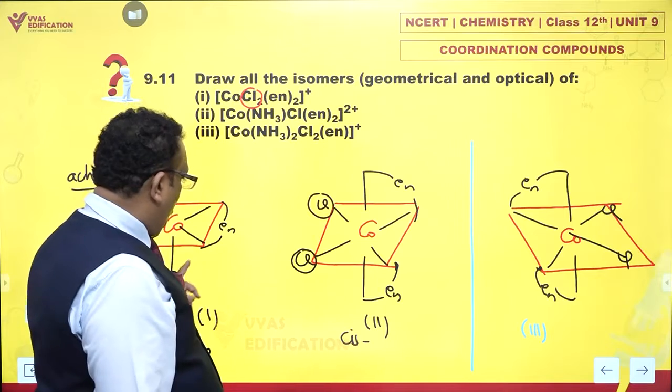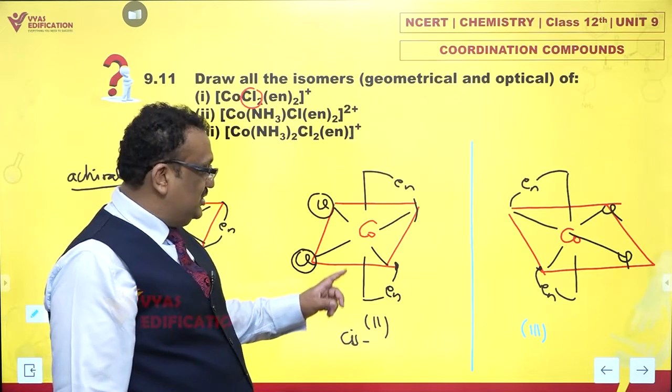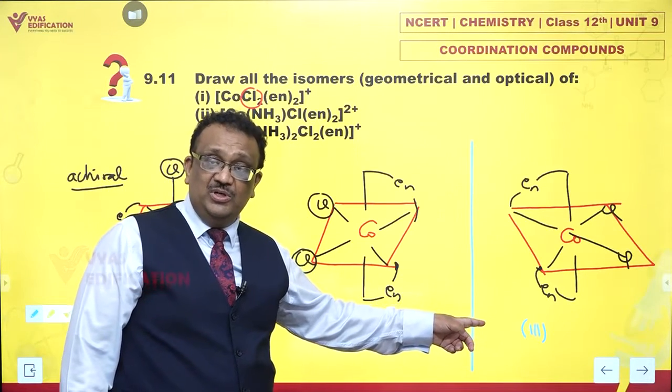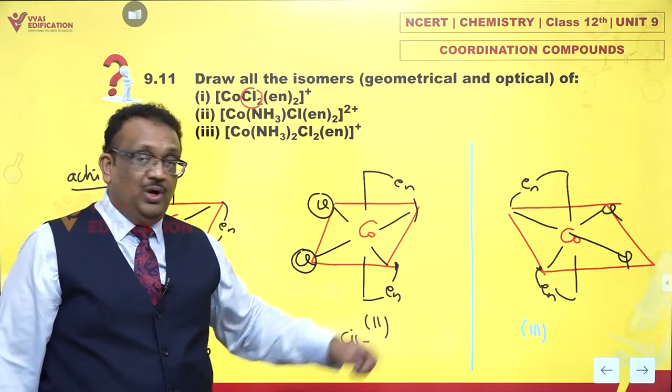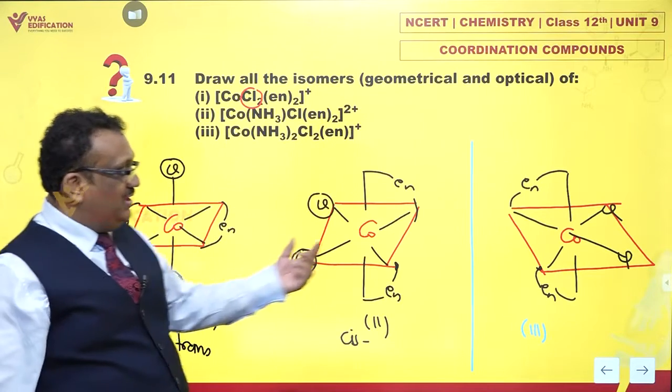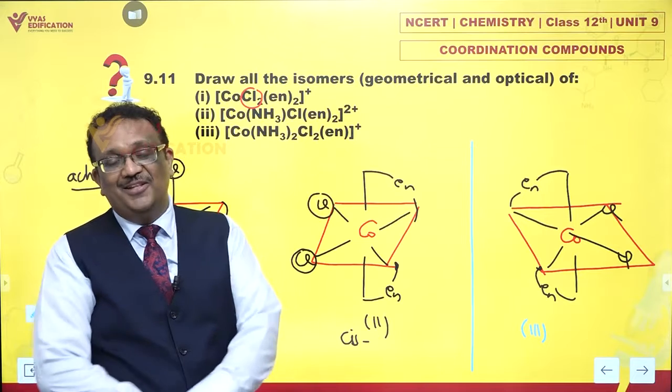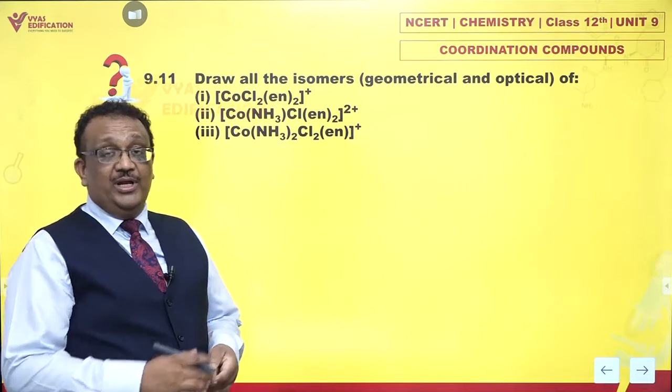One and two are geometrical isomers. Two and three are optical isomers. And one and three also are geometrical only, why? Because one is trans and three is cis, that's the fact.